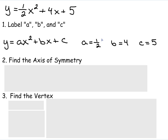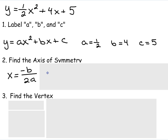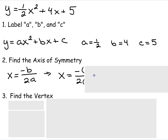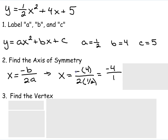After we label a, b, and c, we're going to find the axis of symmetry. The formula to find the axis of symmetry is x equals negative b over 2a. We plug in the values: negative 4 over 2 times one-half. Negative 4 divided by 1 gives us x equals negative 4.